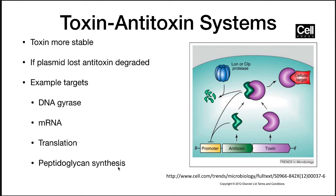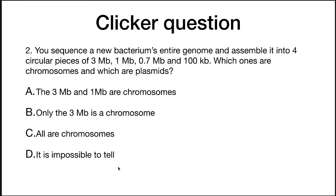We finish this section with a clicker question. You sequence a new bacterium's entire genome and assemble it into four circular pieces: three megabase pairs, one megabase pair, 0.7 megabase pairs, and 100 kilobase pairs. Which ones are chromosomes and which ones are plasmids?